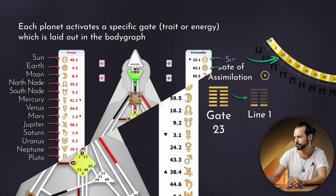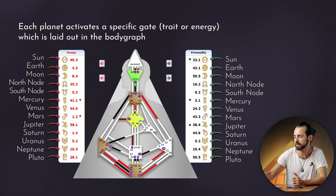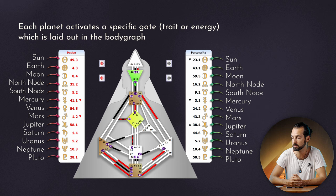Looking at the whole chart, all of the planets are activating a gate and a line. The Sun, the Earth, the Moon, the North Node, the South Node, Mercury, Venus, Mars, Jupiter, Saturn, Uranus, Neptune, and Pluto are all activating something — any of the gates you see in the body graph.